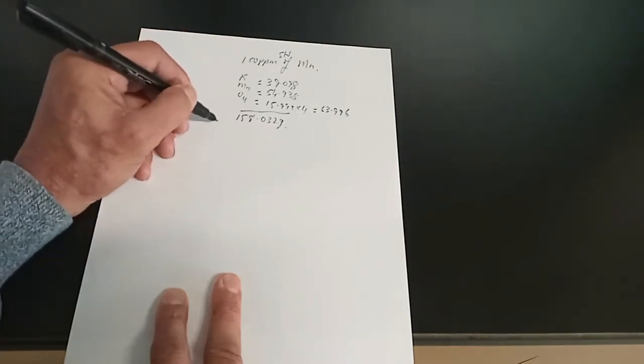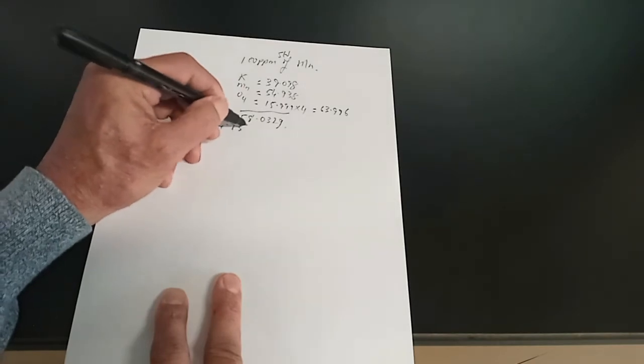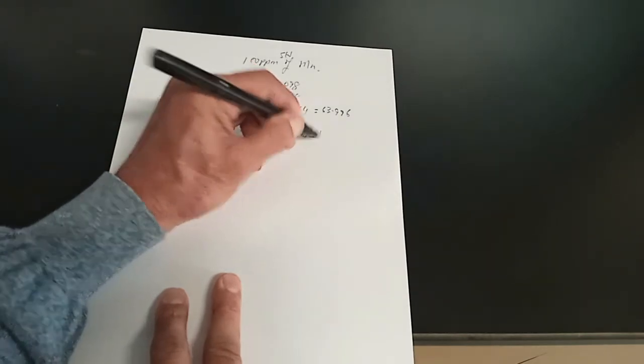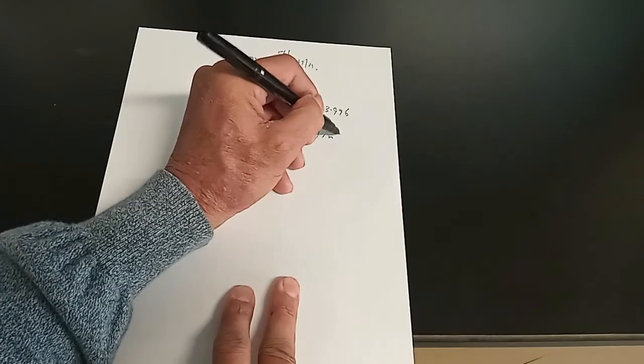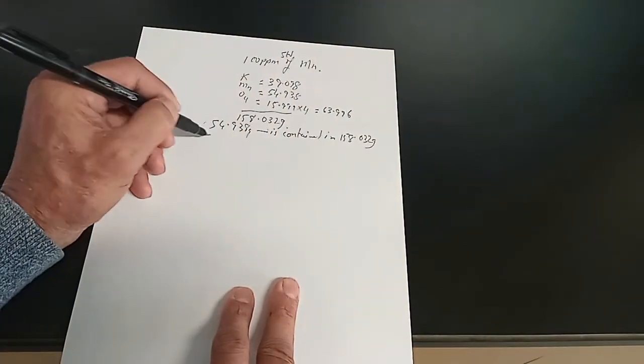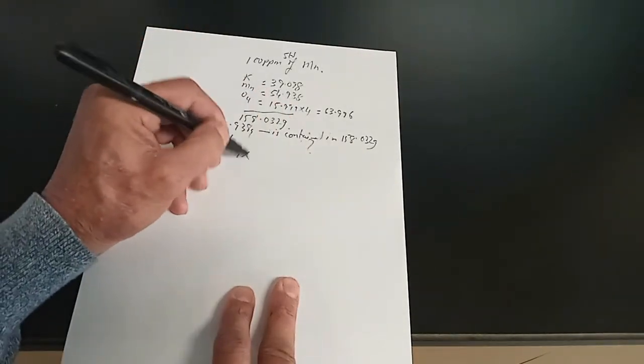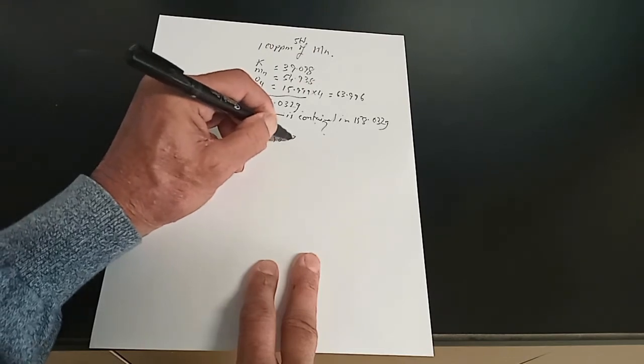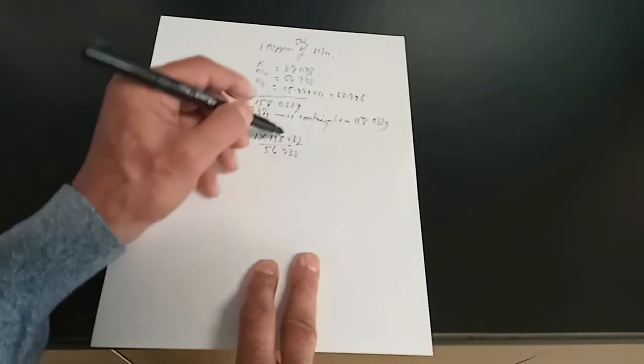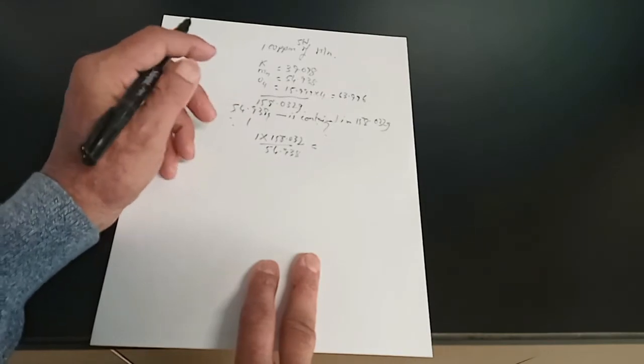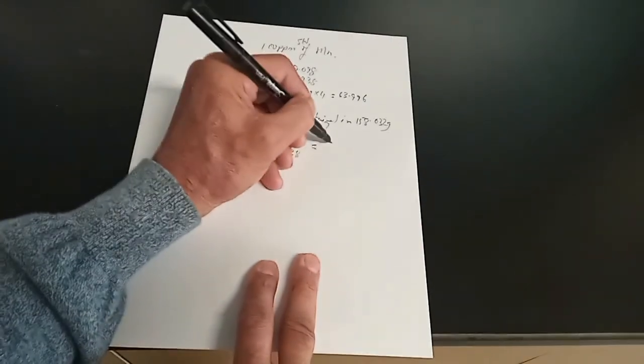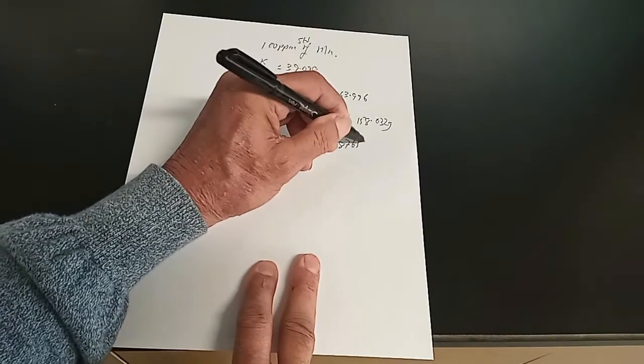So 54.938 grams is contained in 158.032 grams. Therefore, for 1 gram, it's 1 times 158.032 divided by 54.938. Essentially, we're trying to work out per gram of manganese. If I want to take and represent 1 gram of manganese, I would be needing to take 2.8765 grams of KMnO4.